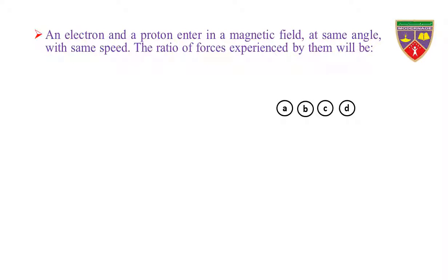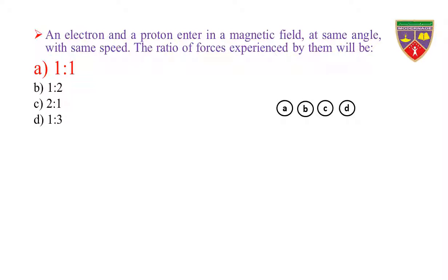An electron and a proton enter in a magnetic field at same angle with same speed. The ratio of forces experienced by them will be: Option A: 1 to 1. Option B: 1 to 2. Option C: 2 to 1. Option D: 1 to 3. The key is 1 to 1. Therefore, the correct option is A.